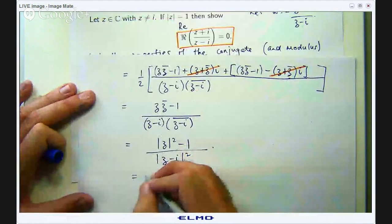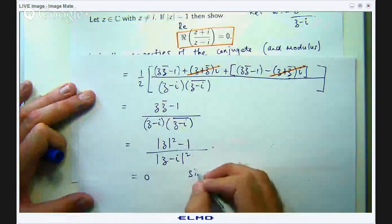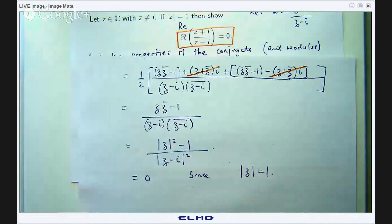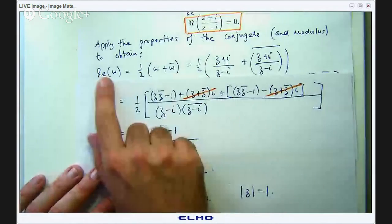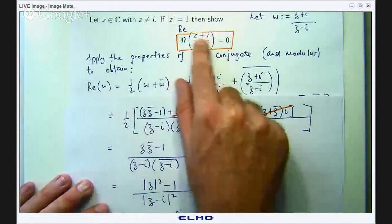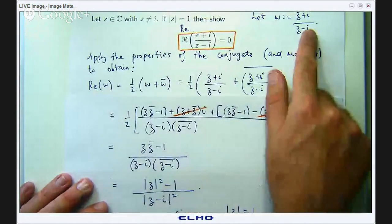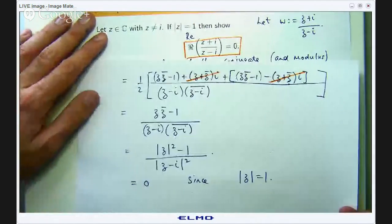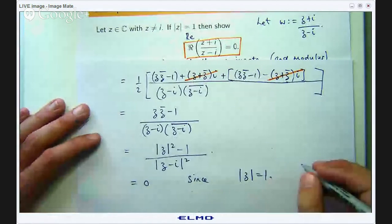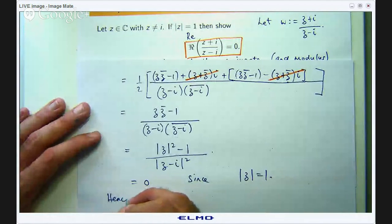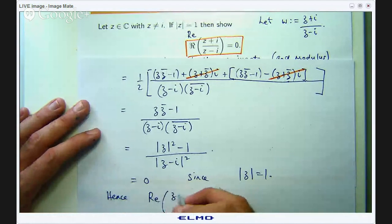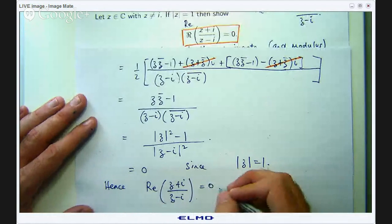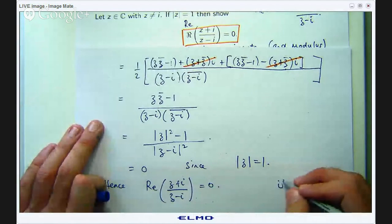Right so what have we done? We have shown then that the real part of this quotient here under this notation here is 0. Okay so we are pretty happy about that. So let us write that down. Hence the real part of this is 0. We are really happy.